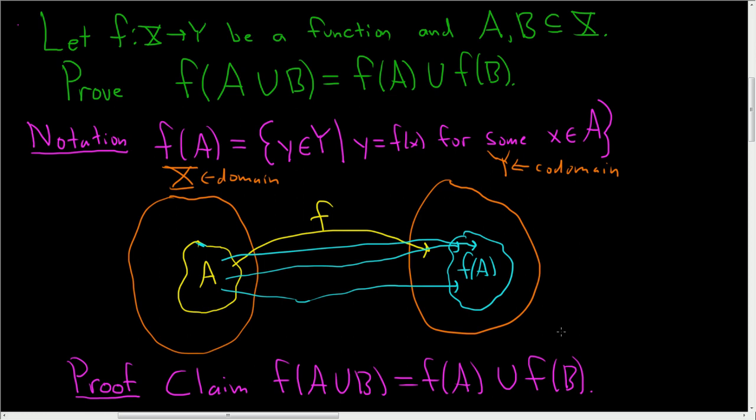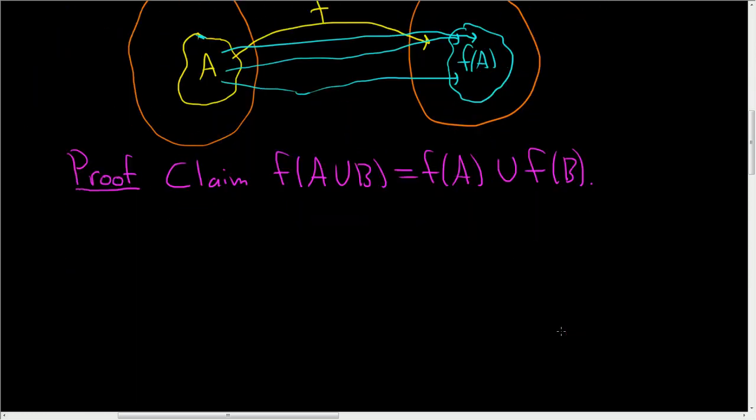So we'll start by taking an element in this set here, and we'll show it belongs to the set on the right-hand side. So take any Y in the direct image of A union B under F. So what does it mean for Y to be in this set?